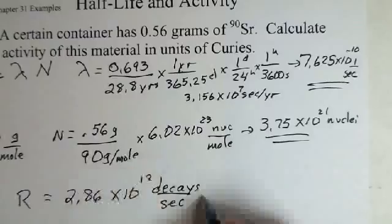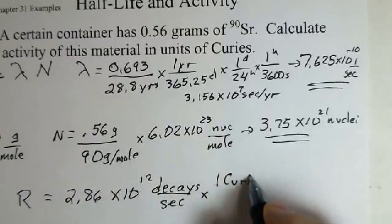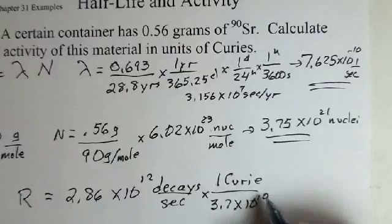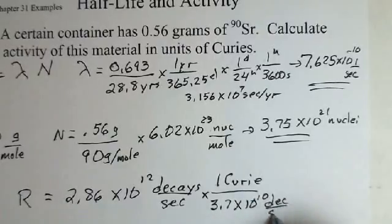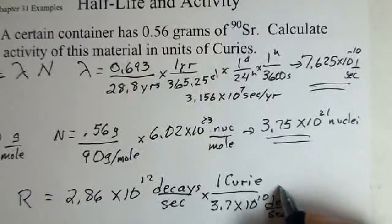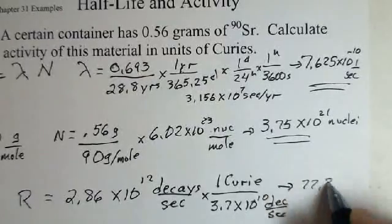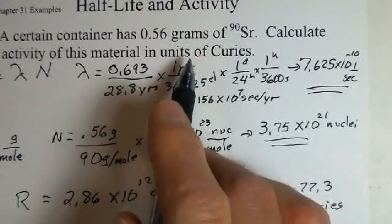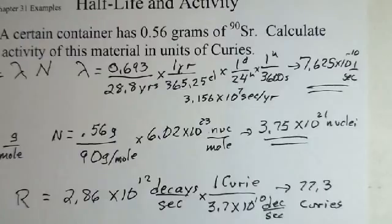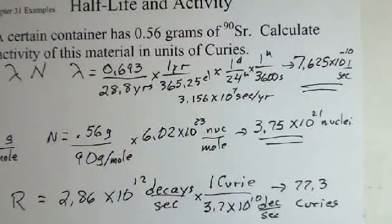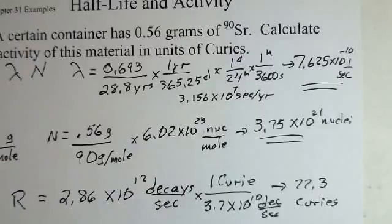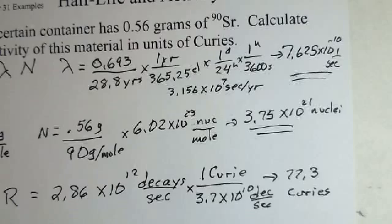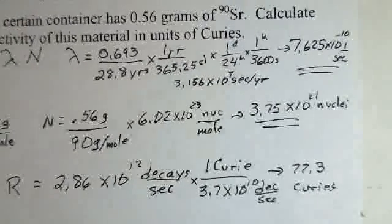Multiplying those two together, and we come up with the 2.86, 10 to the 12th decays per second. To put it into the units of curies, there's a conversion factor. So one curie, 3.7 times 10 to the 10th decays per second. So this would end up with 77.3 curies. That's a huge number. We've got a significant amount of grams of the strontium-90. So 77.3 curies. Keep your distance. Wear protective clothing. Don't stay near this source very long.